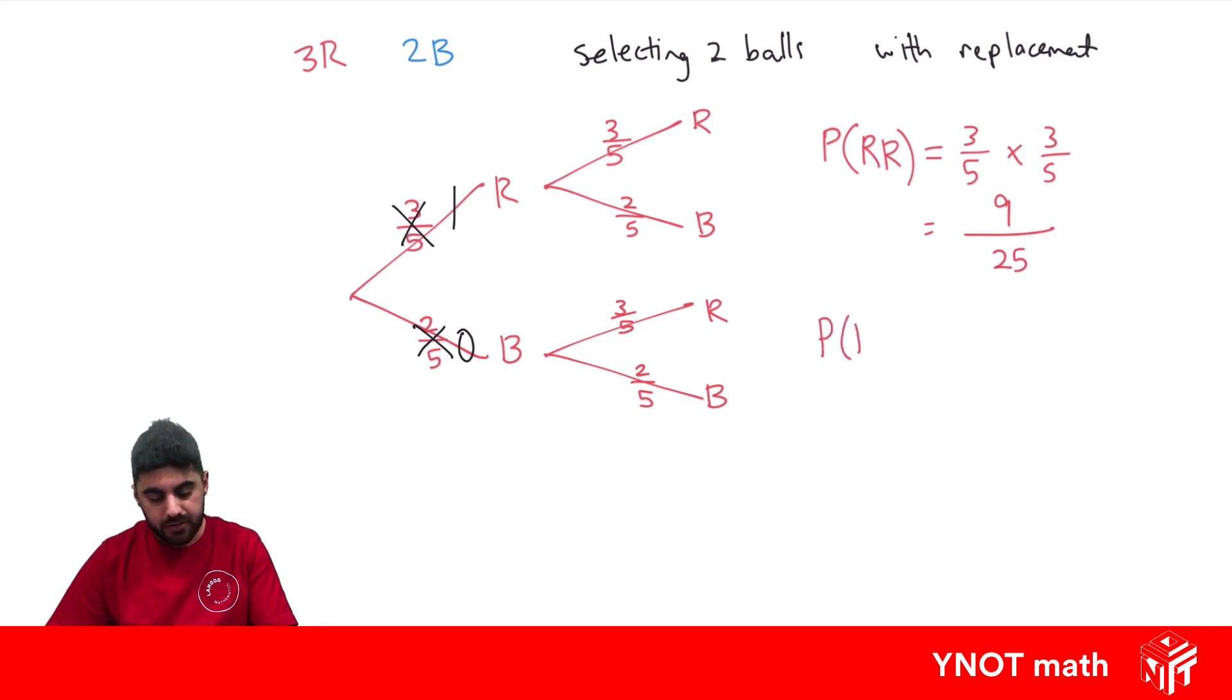So then with that extra bit of information, we can now work out a different probability. Probability of a red and a red is going to be one times three out of five, which is just going to be three over five. So probability changes based on additional information with conditional probability.